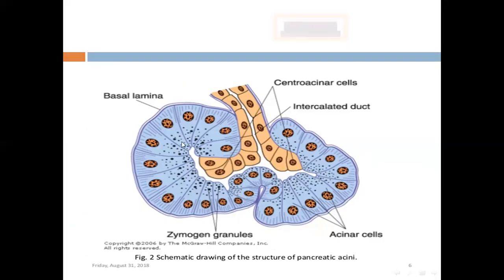This is the secretory portion which consists of 40 to 50 cells that combine with three to four cells we call central acinar cells. What are these central acinar cells? They are considered the beginning of the ductal system.